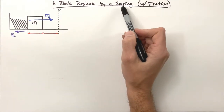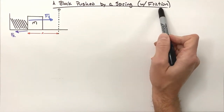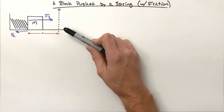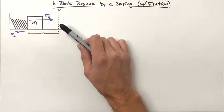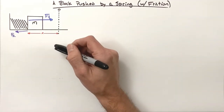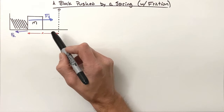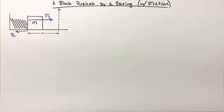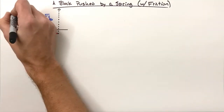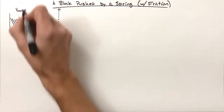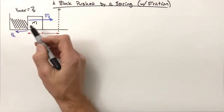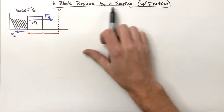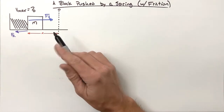What we have here is a block pushed by a spring, just like the last problem, except this time we're dealing with friction. This problem is the quintessential AP Physics problem — or introduction to college-level physics problem — that you're going to run across. What I want to work out is: what's the fastest this block is going to travel, and where does that occur? We're looking for the maximum velocity of the block. You might think the spring pushes the block forward and it keeps speeding up, just like the frictionless case — but no.